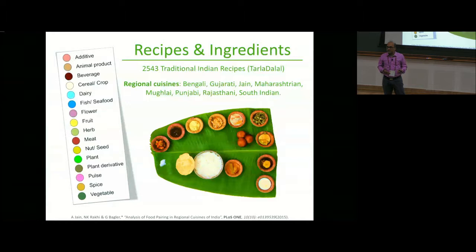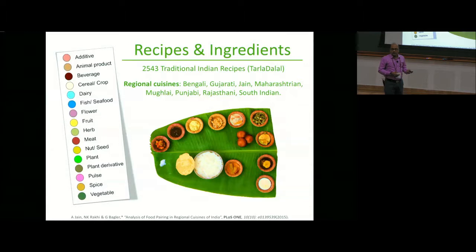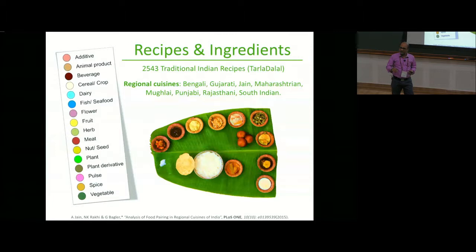We compiled around 2,500 recipes at that time, from the length and breadth of the country, belonging to different geocultural regions, communities, and cultures. We looked at these recipes at the level of their ingredients—still an unordered list, still a spherical cow—and each ingredient is exclusively marked to one of around 16 categories: dairy, spice, vegetable, and so on.